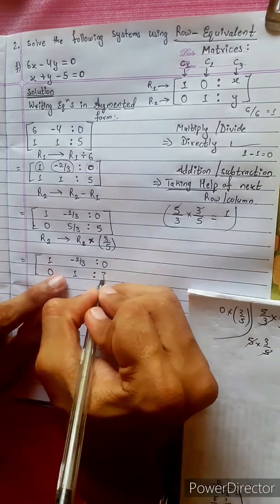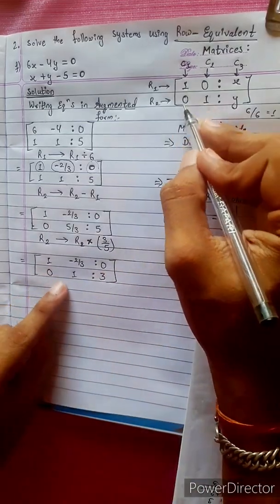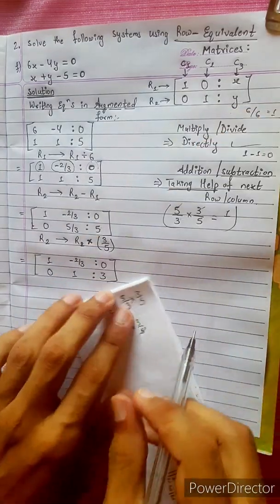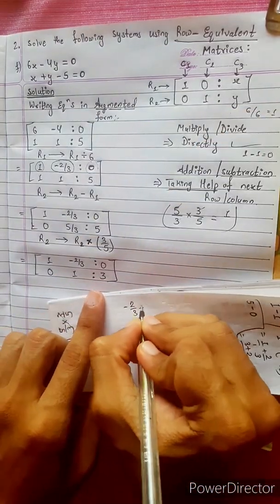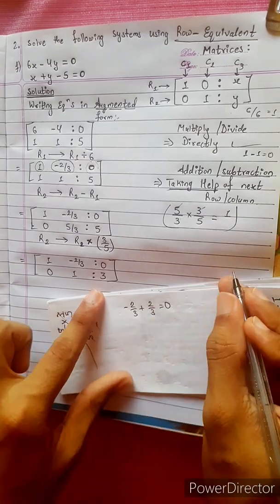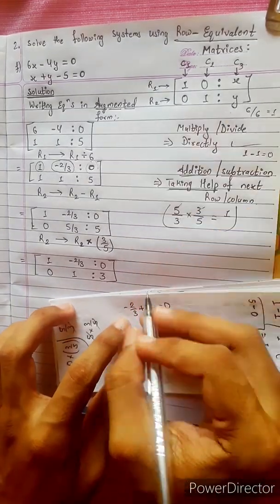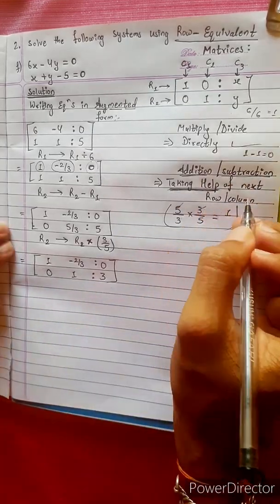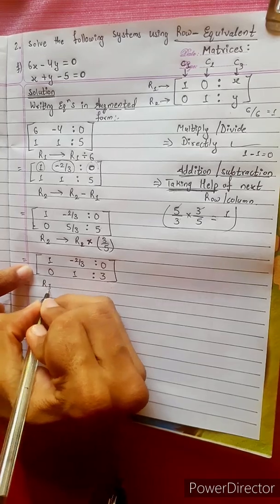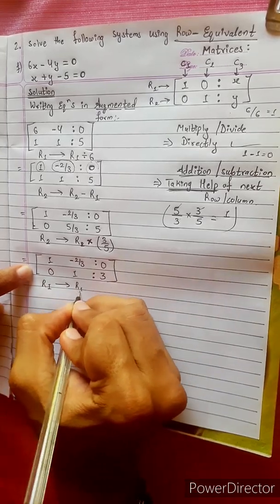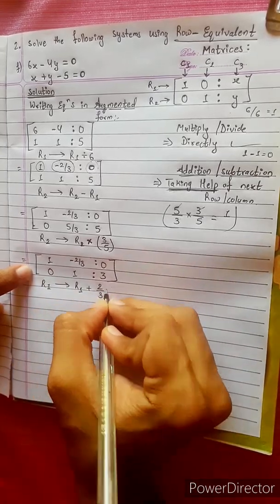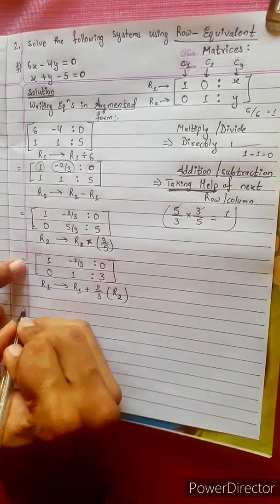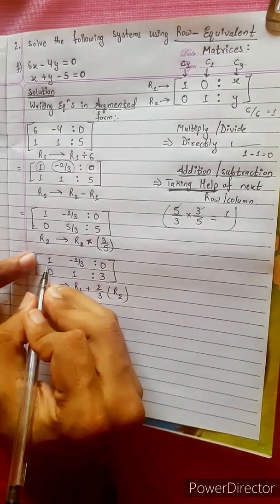After cancellation, R2 becomes: 0, 1, 0. Now we need to eliminate the minus 2/3 in R1. R1 changes into R1 plus (2/3) times R2.